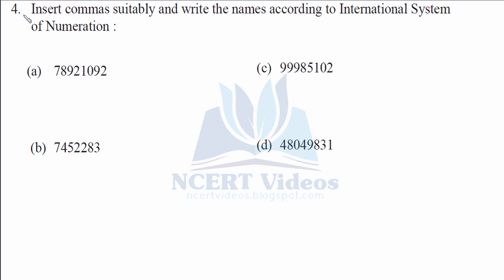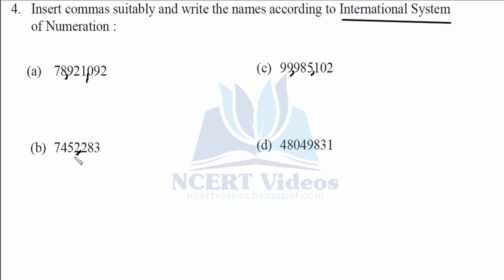Question 4: Insert commas suitably and write the names according to the international system of numeration. In the international system, we place commas after every three digits — after hundreds, after thousands, after hundred-thousands, and so on. That is the only difference between the Indian and international systems. So placing commas in all four questions accordingly.